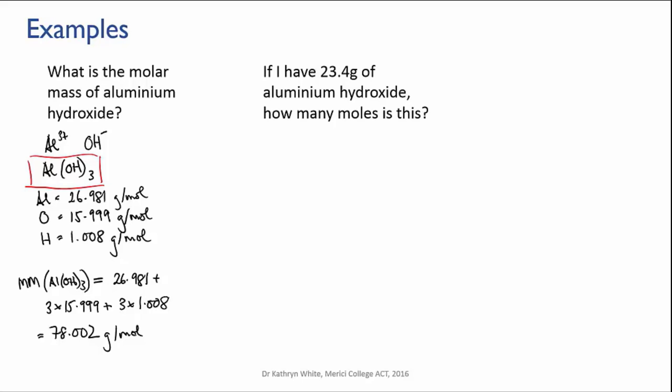One is just to use the formula I gave you before. The other will use the kind of format that I've also used in the videos on unit conversions. Now here's the problem: If I have 23.4 grams of aluminum hydroxide, how many moles of aluminum hydroxide is this?